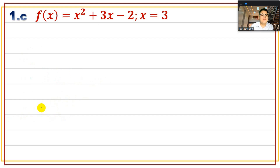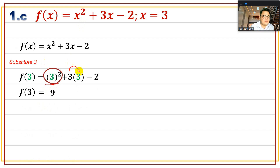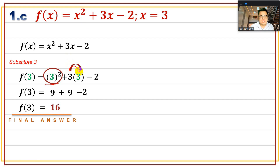For x = 3: f(3) = 3² + 3(3) - 2. Simplify: 3² = 9 and 3 × 3 = 9. So f(3) = 9 + 9 - 2 = 16. Therefore f(3) = 16.